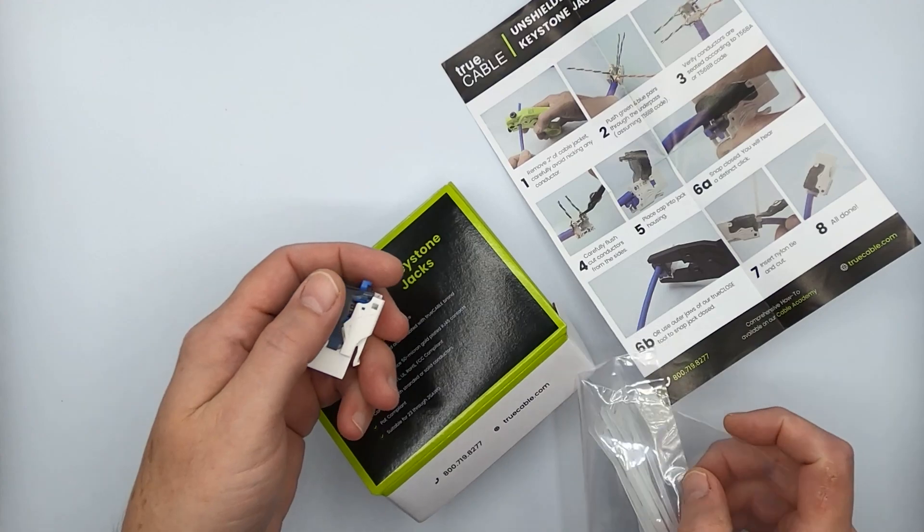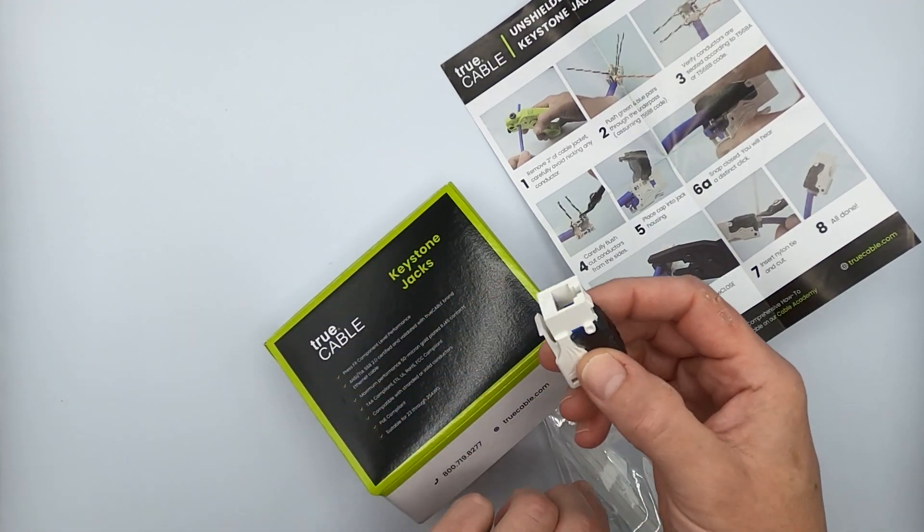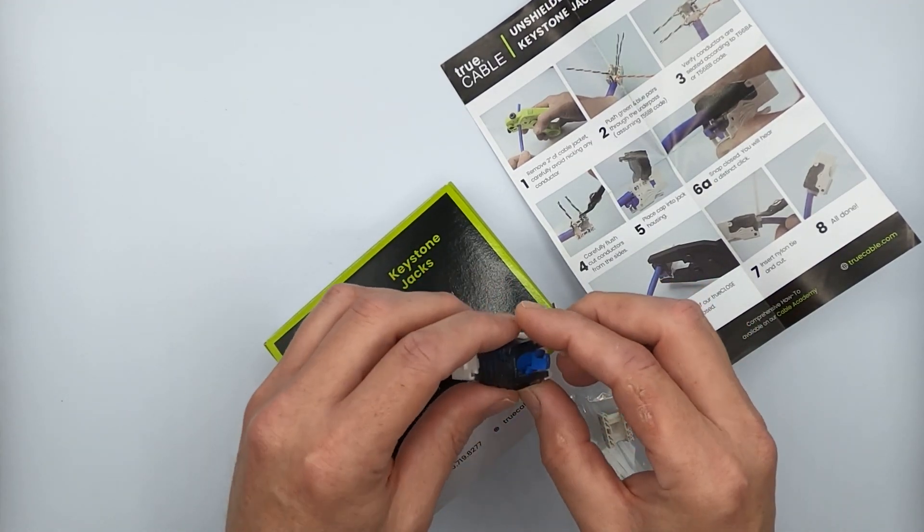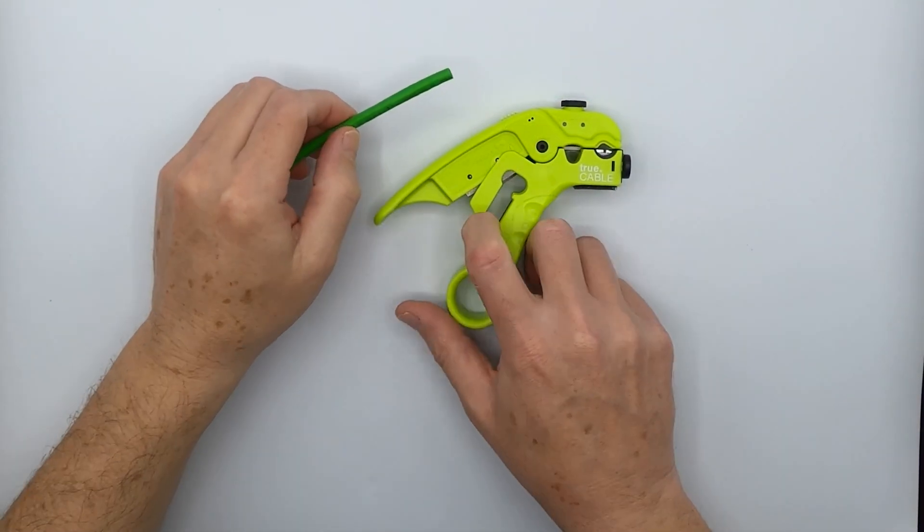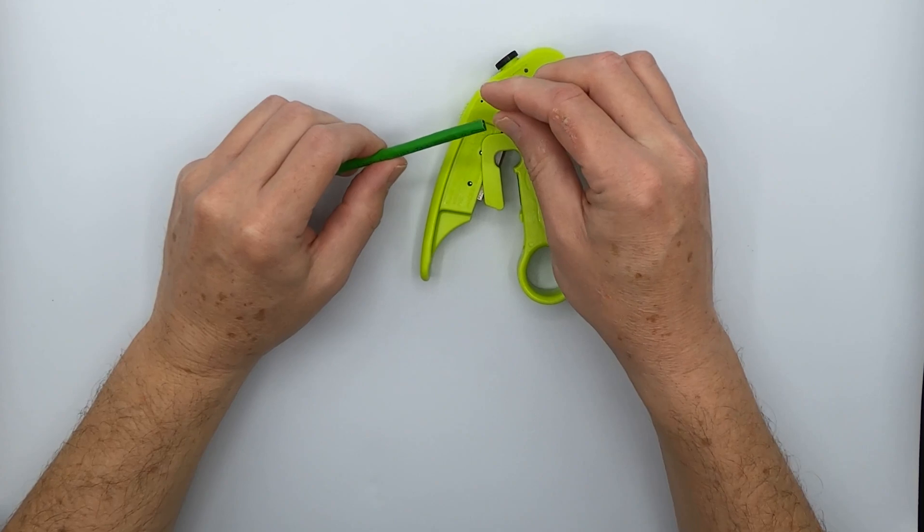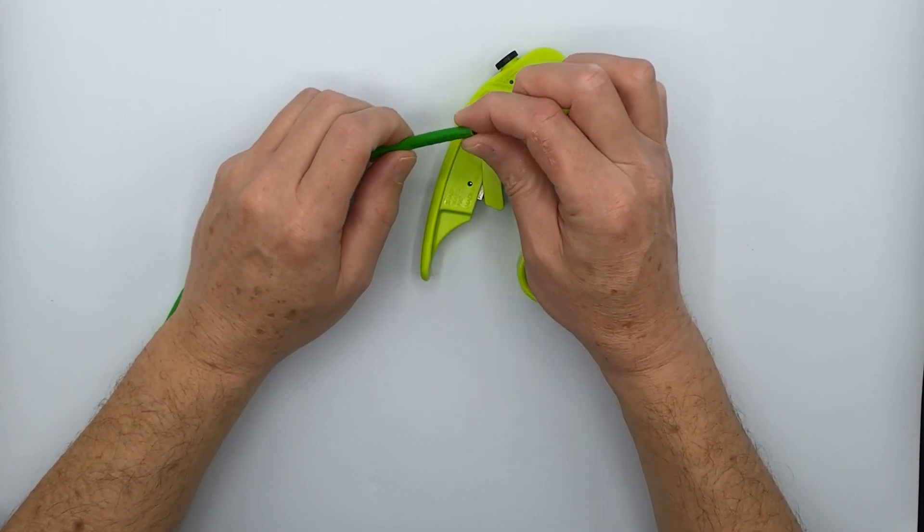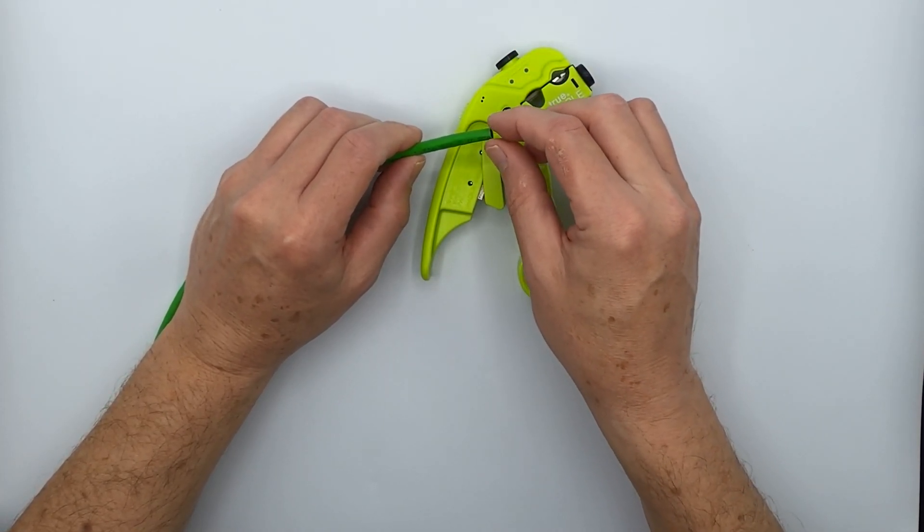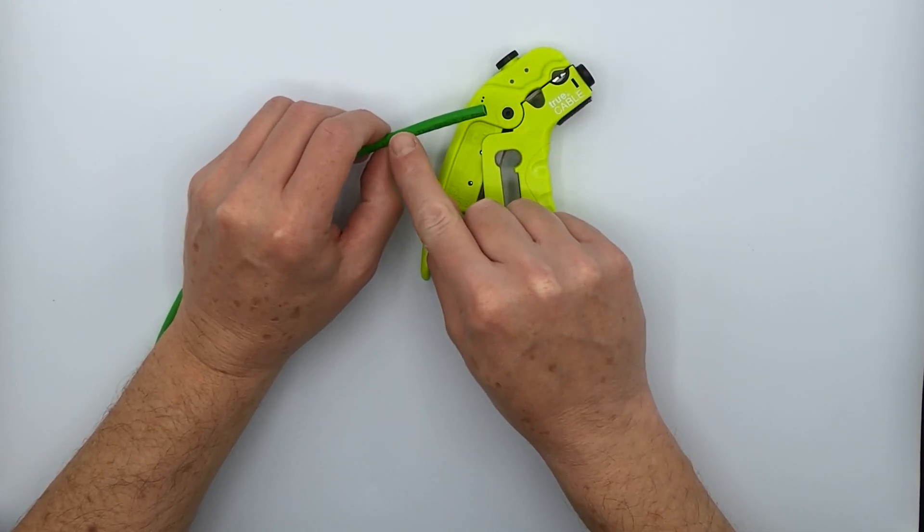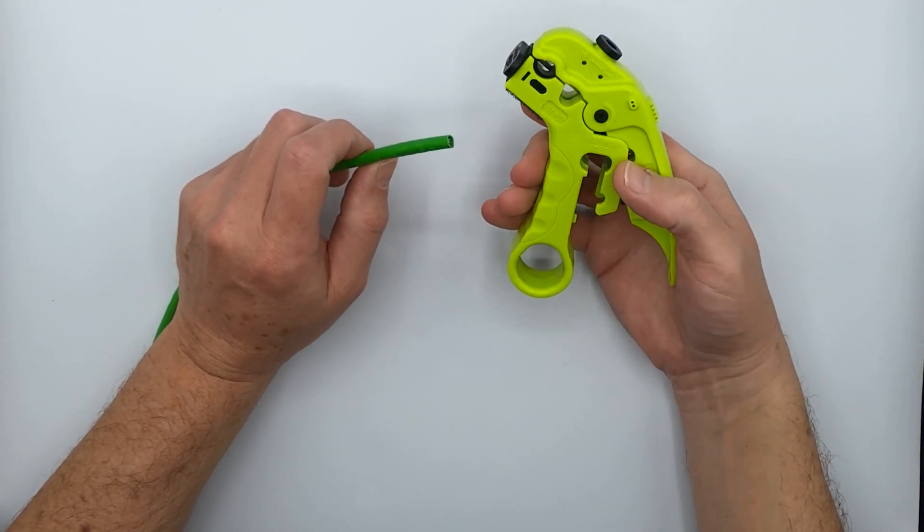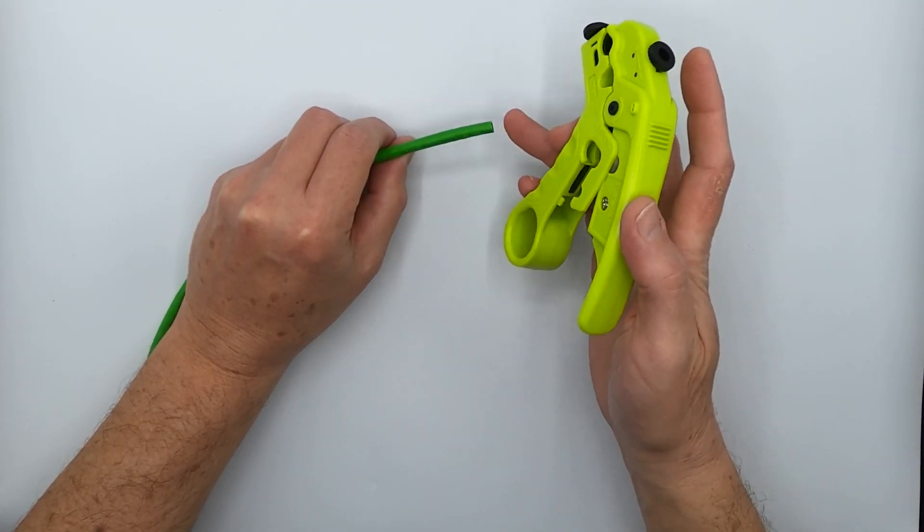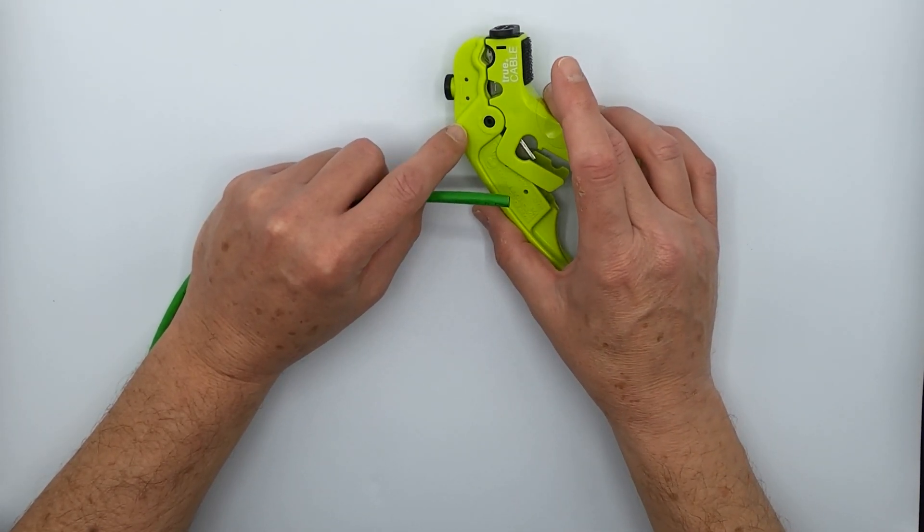So I say let's get to it, let's get to terminating one of these Category 6 jacks with some Category 6 cable and see how it all goes. Okay, so for our demonstration of the Category 6 toolless keystone jack termination unshielded, we're going to use Category 6 unshielded plenum and we'll start by stripping off the cable jacket so we can terminate the jack properly.